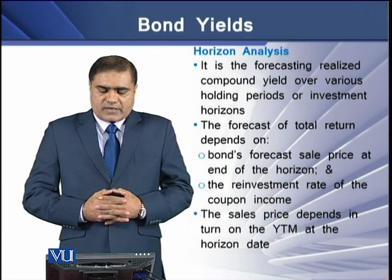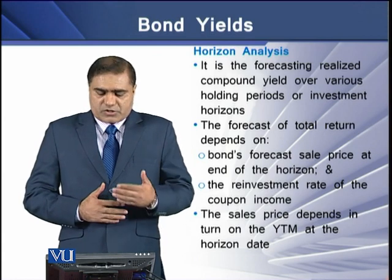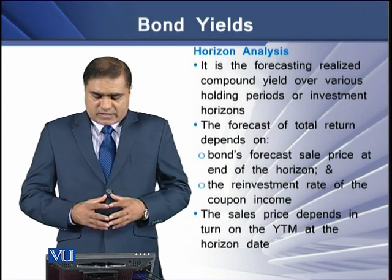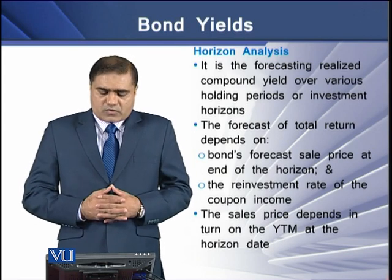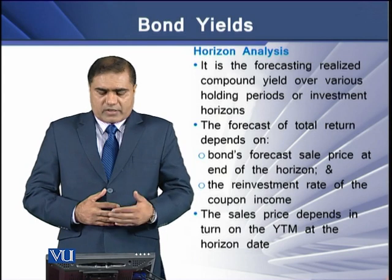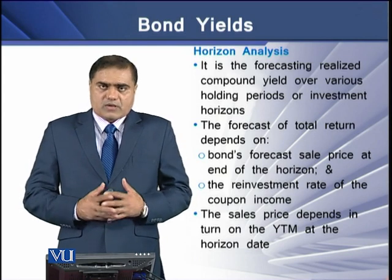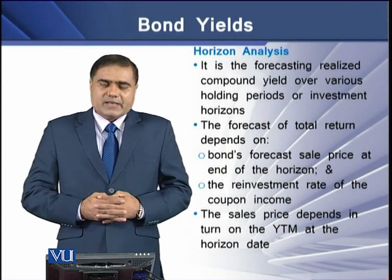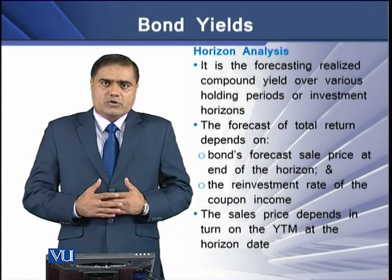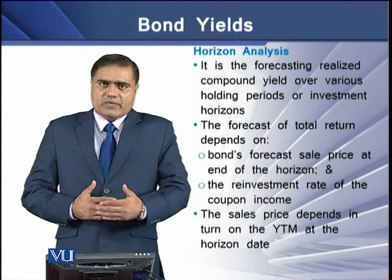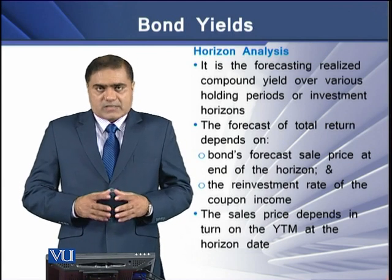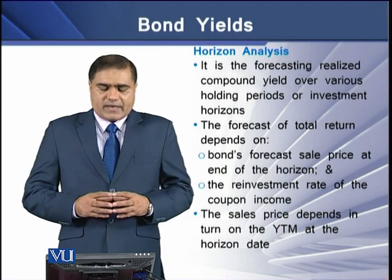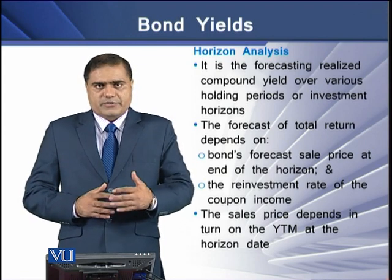Horizon analysis is the forecasting of realized compound yield over various holding periods or investment horizons. The forecast of total return depends on two things: first, the bond's forecast sale price at the end of the holding period; and second, the reinvestment rate at which the coupons are reinvested. The sale price in turn depends on the YTM at the horizon date.